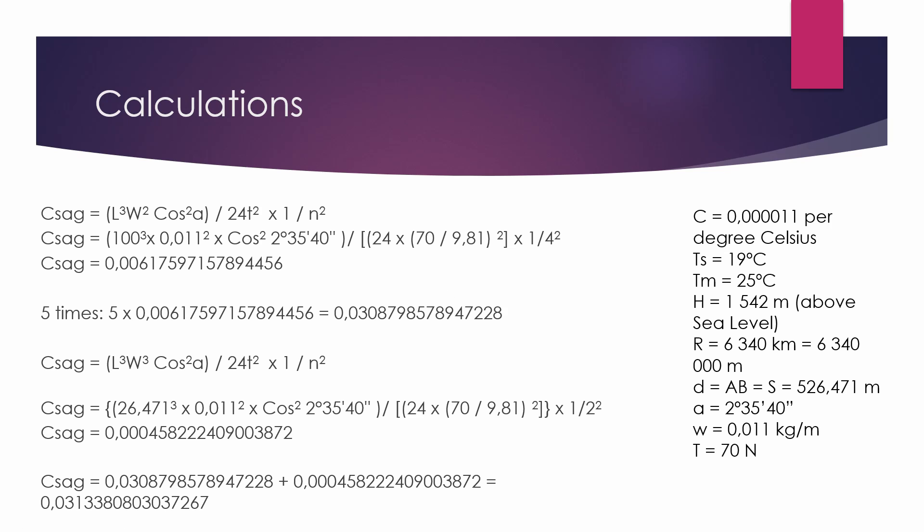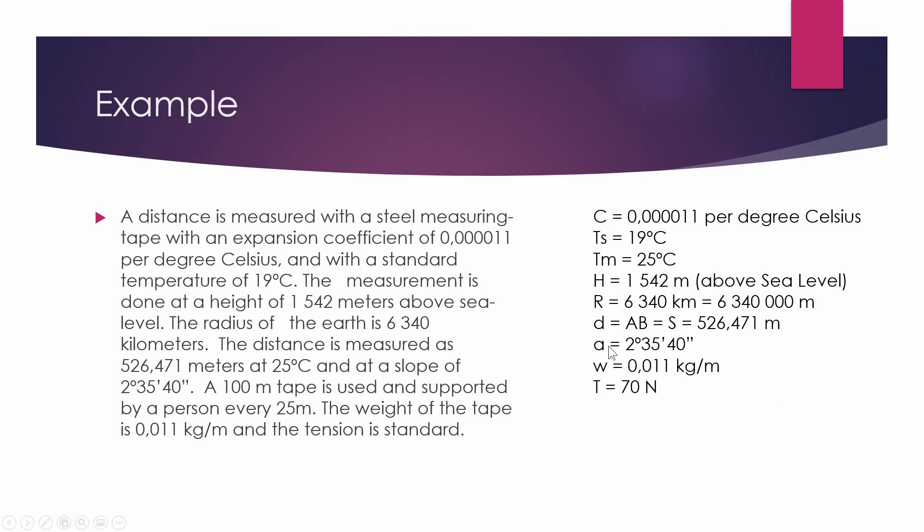Now for the sag calculations, we have to make sure about two things. First of all, if we go back to the description of what happened on the survey, we need to see the 100 meter tape is, that's how long our tape is. So what that means is that this 526.471 meters had to be measured at a minimum of six times, meaning the first five times would be 100 meters each. So we'll have 100 meter sections, as that's the longest measurement we can take per stretch. And then after those five times, we have measured 500 meters. Then the last section would be the 26.471. Now the 100 meter sections will all have the same correction factor, but the 26 will have a different sag correction factor.